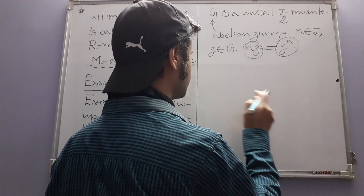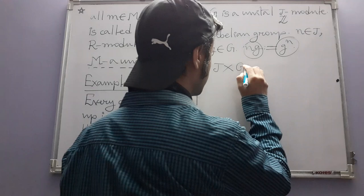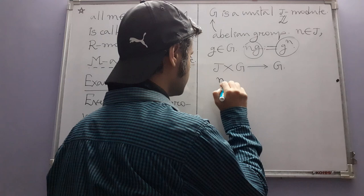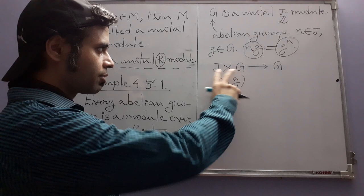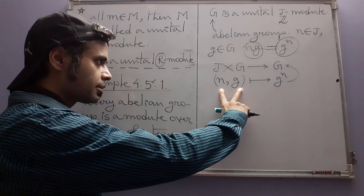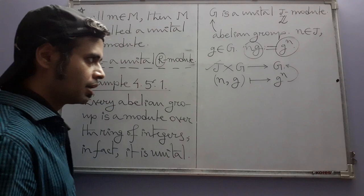For condition (2), n(mg) by definition is the power of g with exponent nm. Using the laws of exponents from group theory, nm = mn, and we can write this as the mth power of g raised to the nth power, which in our notation is n(mg). So condition (2) holds.